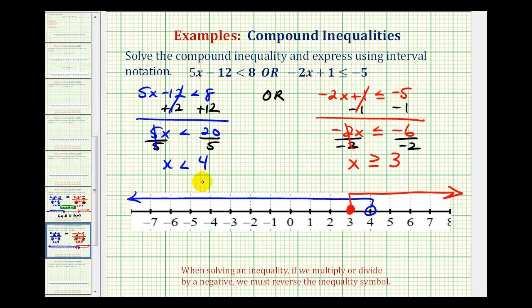Now it's extremely important to remember that these two inequalities are connected by the word OR. The solution is x is less than 4 or x is greater than or equal to 3.